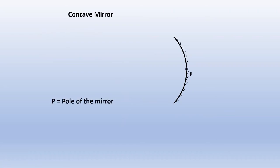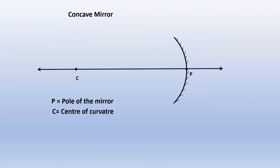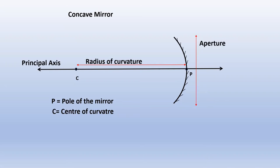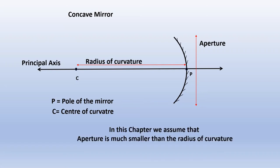Let's discuss the concave mirror. The middle of the mirror is called the pole. The center of the sphere of which the mirror is a part is called the center of curvature. The line joining the center of curvature and the pole of the mirror is called the principal axis. The distance between the pole and the center of curvature is called the radius of curvature. The length of the mirror is called aperture. In this chapter, we assume that the aperture is much smaller than the radius of curvature.